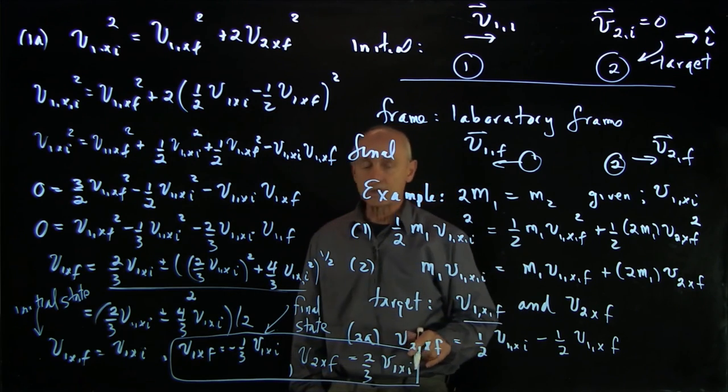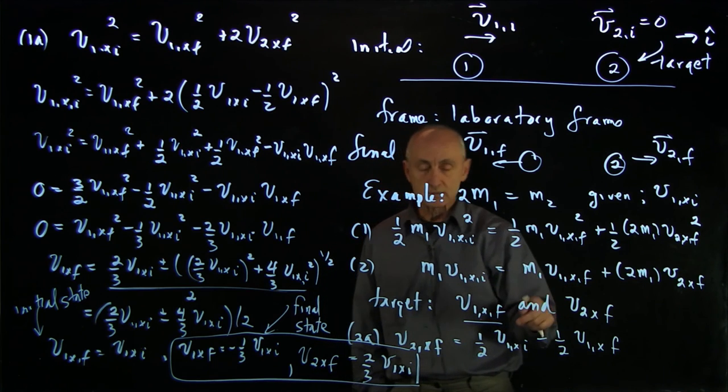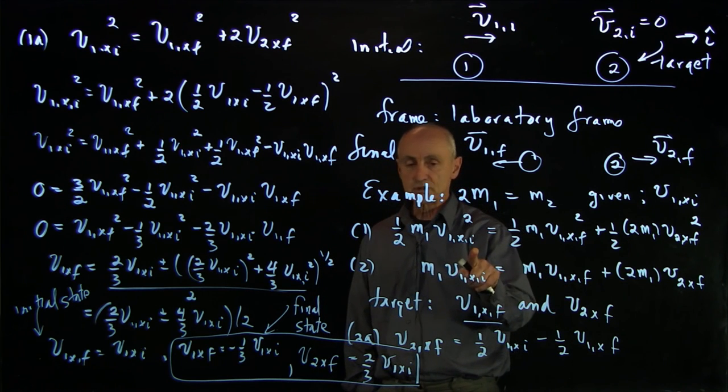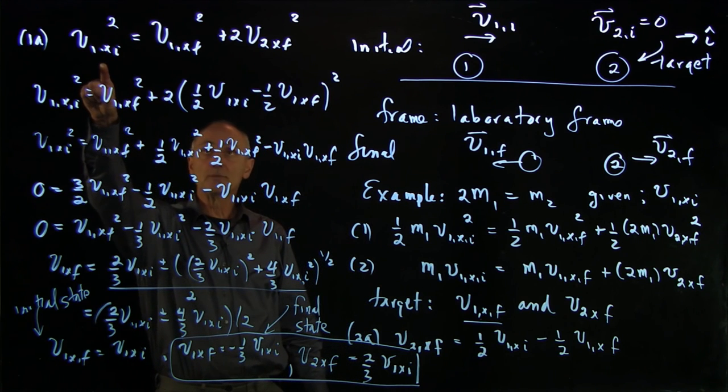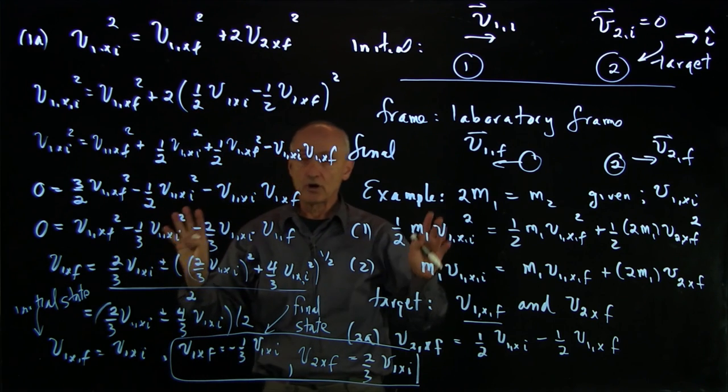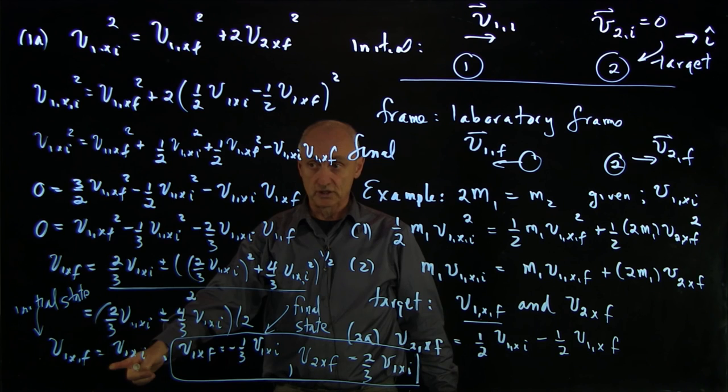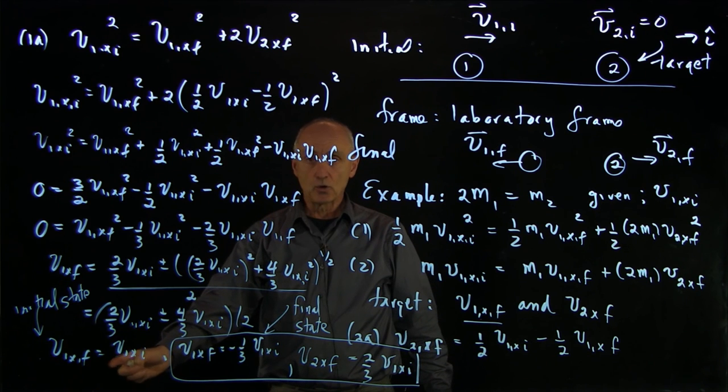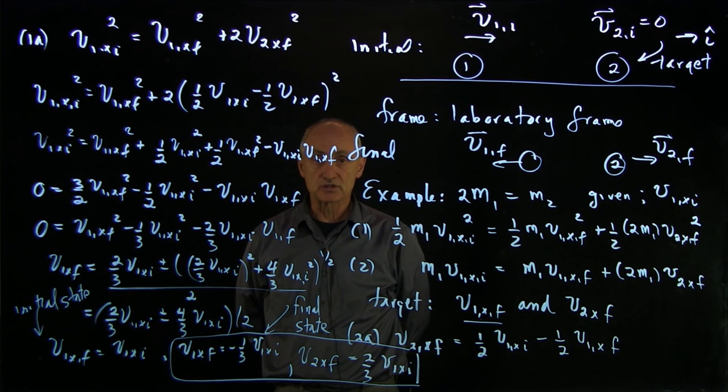Now, of course, what you want to do is you want to check. We know the momentum condition is already satisfied. But just as a check, you would like to put it into the energy condition just to make sure that when you square these things out, you get the right terms. However, we're very confident of our result because we've already reproduced the initial conditions. And that wouldn't happen if we made some algebraic mistake.